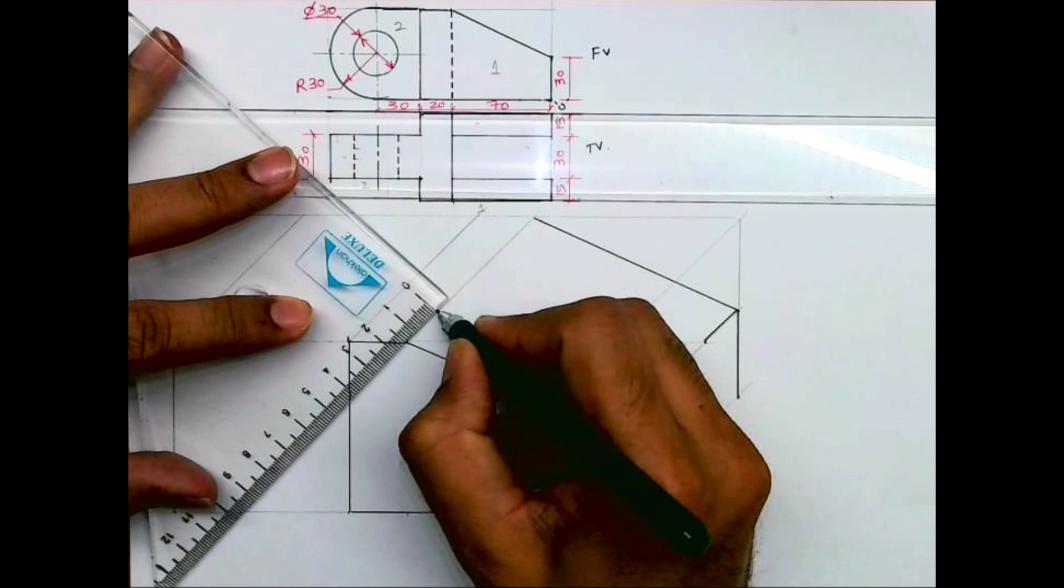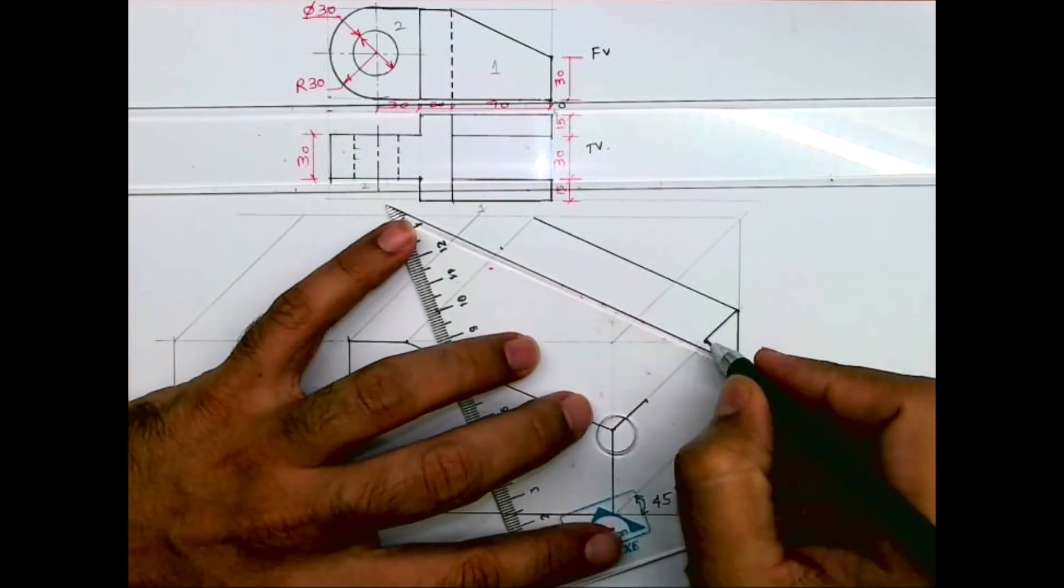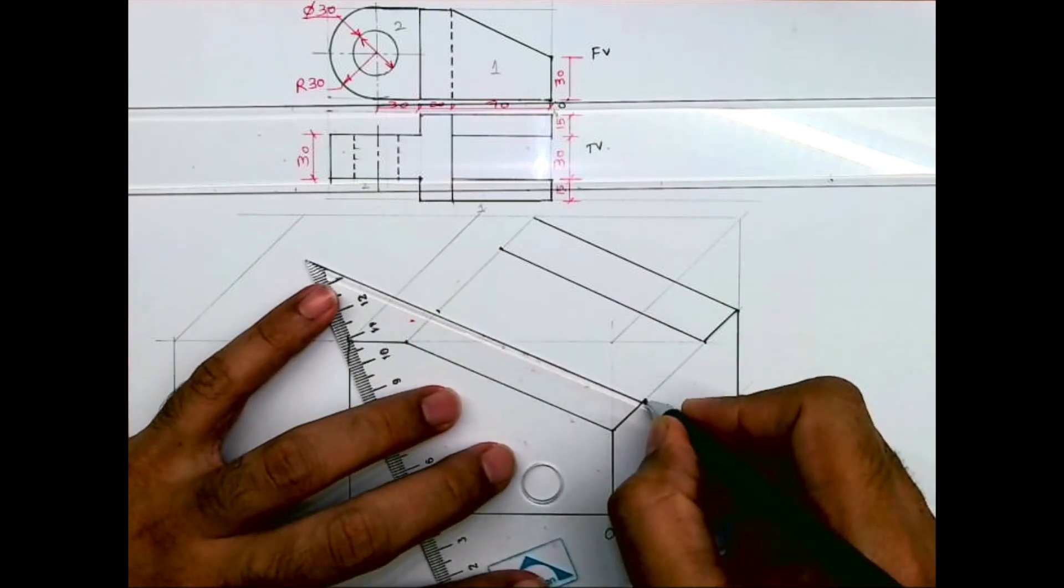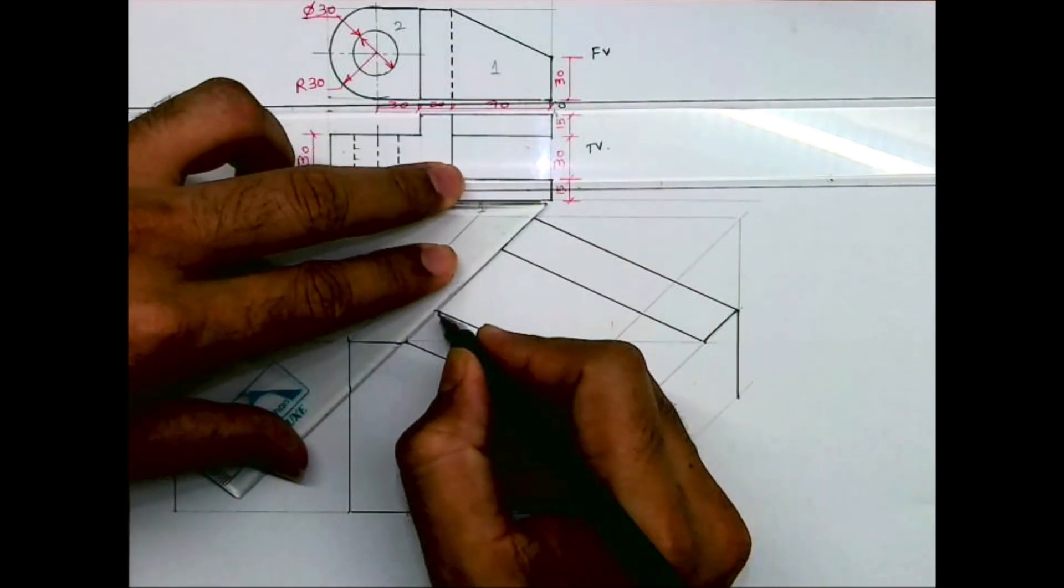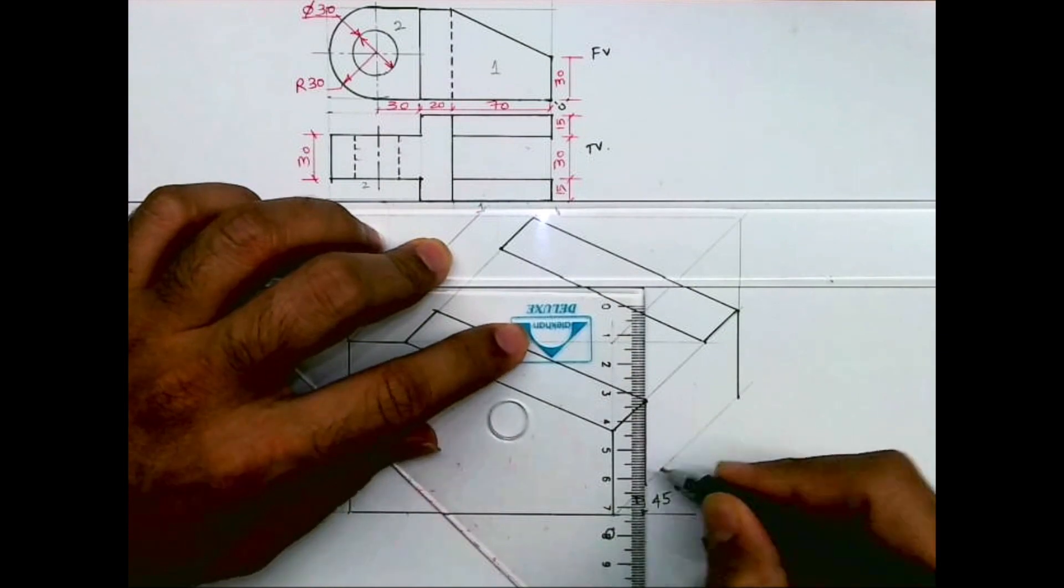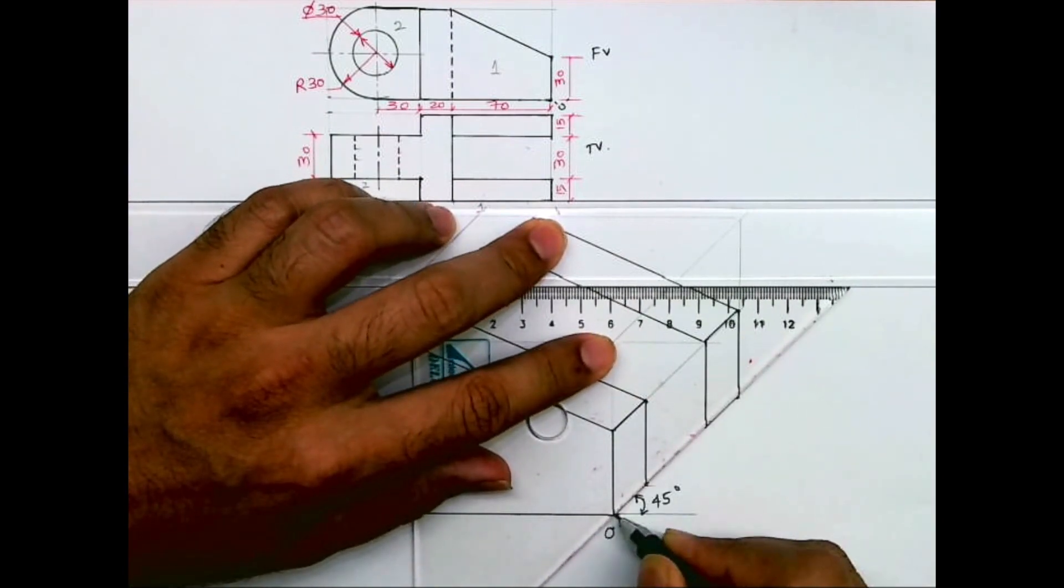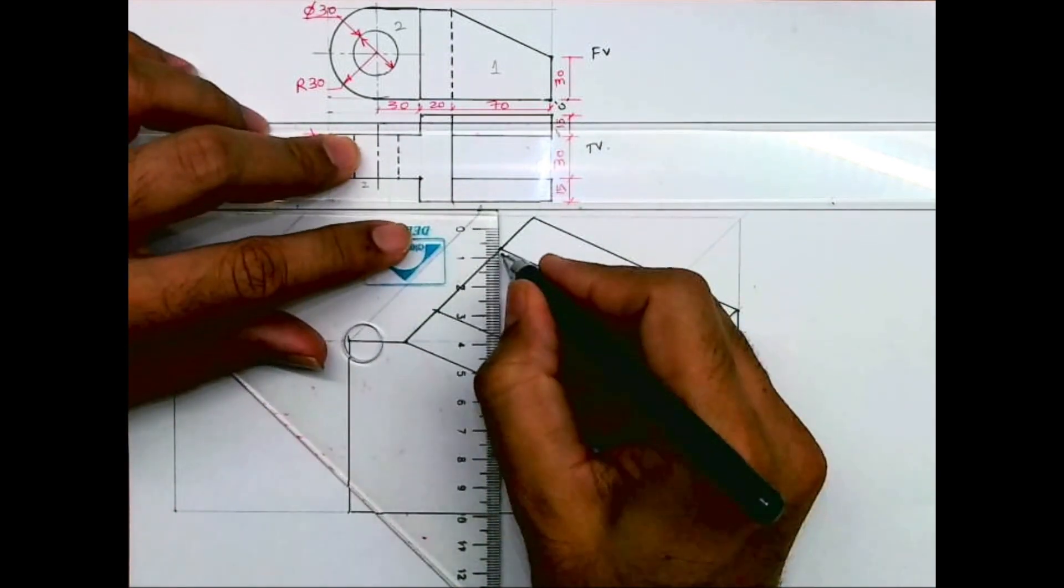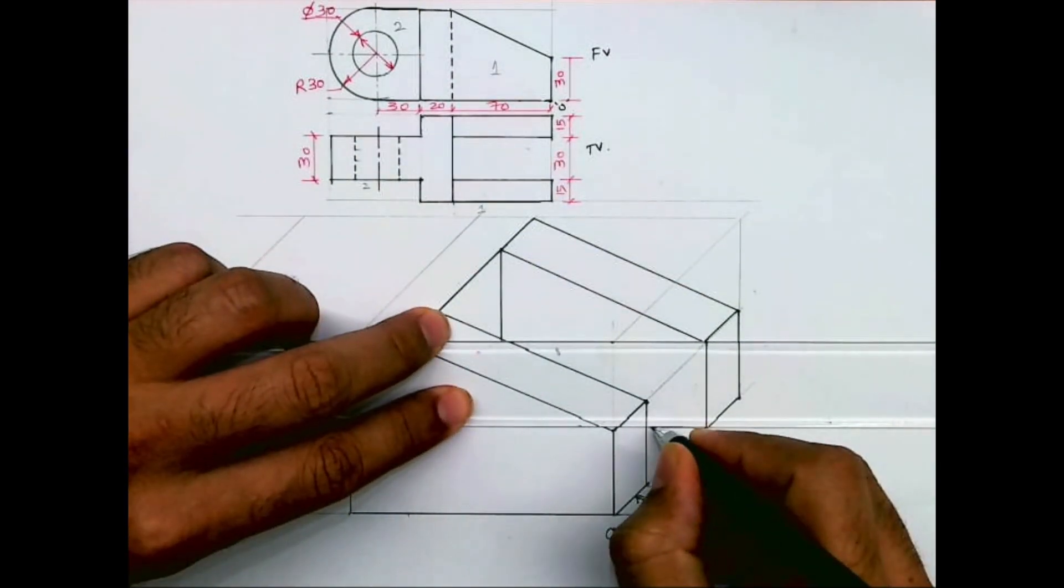Here also I will mark 15, and from here 15, and then I will join. This is dark, this is dark, and from here a vertical line. Here also this line will be done and we'll draw a vertical line. It is dotted in front view but that will be dark over here. So this way we are done with part one.